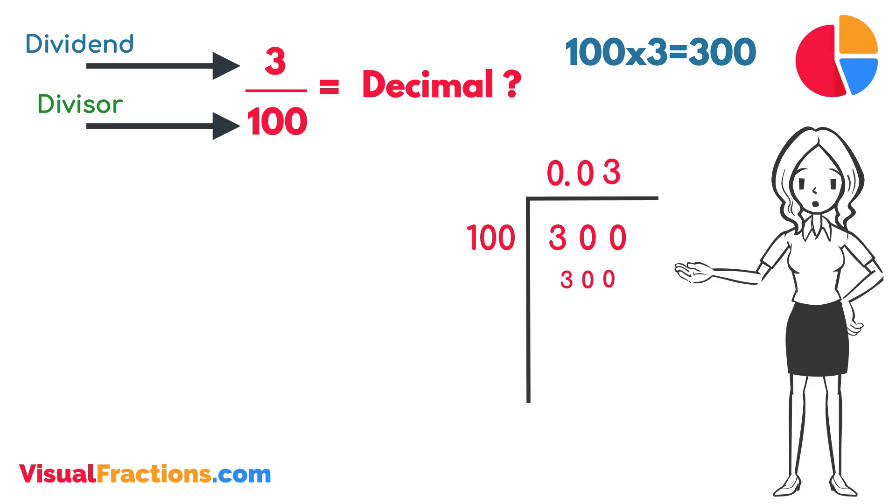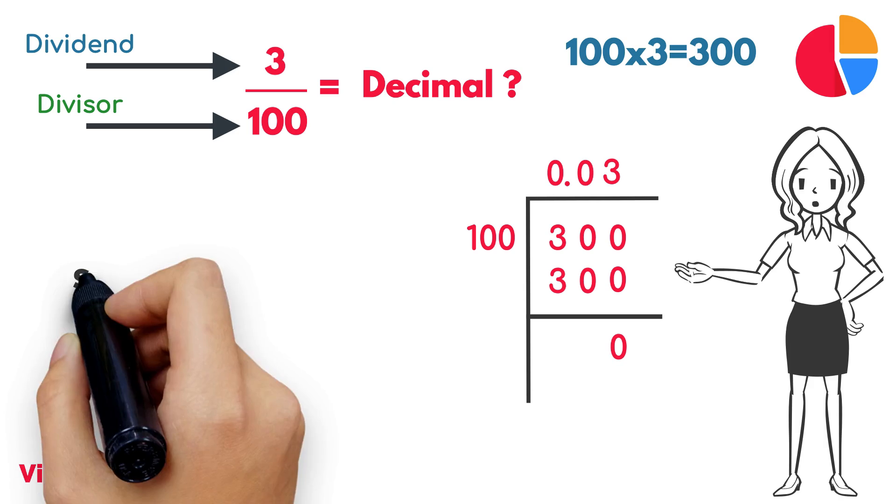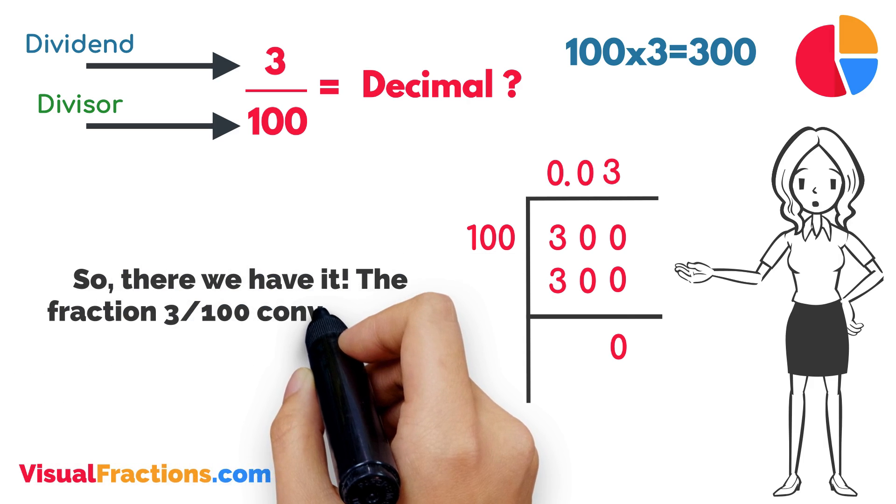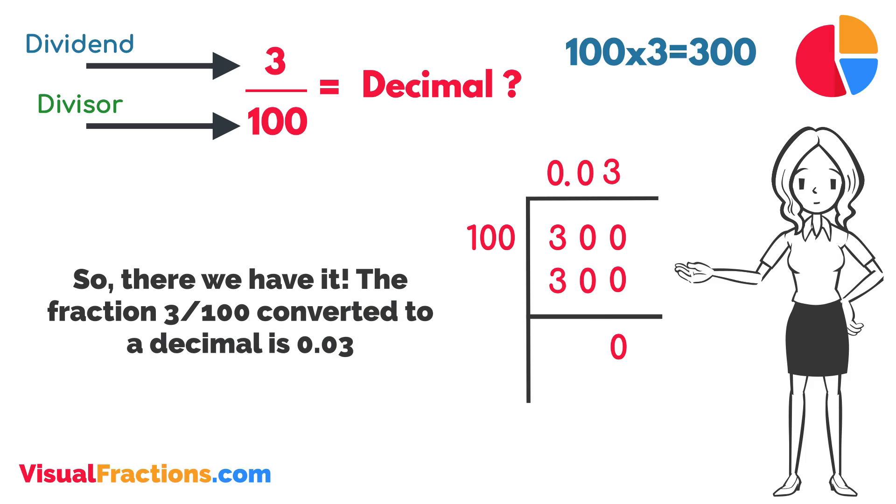Multiplying 3 by 100 gives us 300. When we subtract 300 from 300, we get a remainder of 0. So, there we have it. The fraction 3/100 converted to a decimal is 0.03.